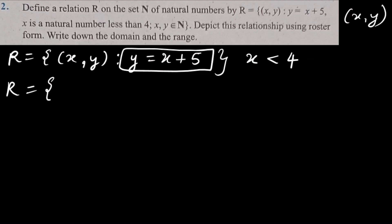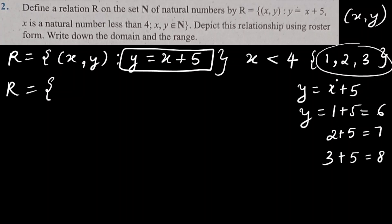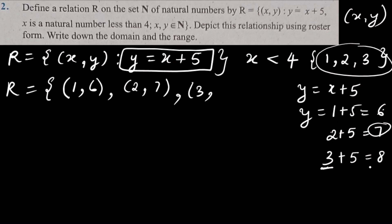Since x is a natural number less than 4, the possible values of x are 1, 2, and 3. When x = 1, y = 1 + 5 = 6. When x = 2, y = 2 + 5 = 7. When x = 3, y = 3 + 5 = 8. So the relation in roster form is {(1,6), (2,7), (3,8)}.